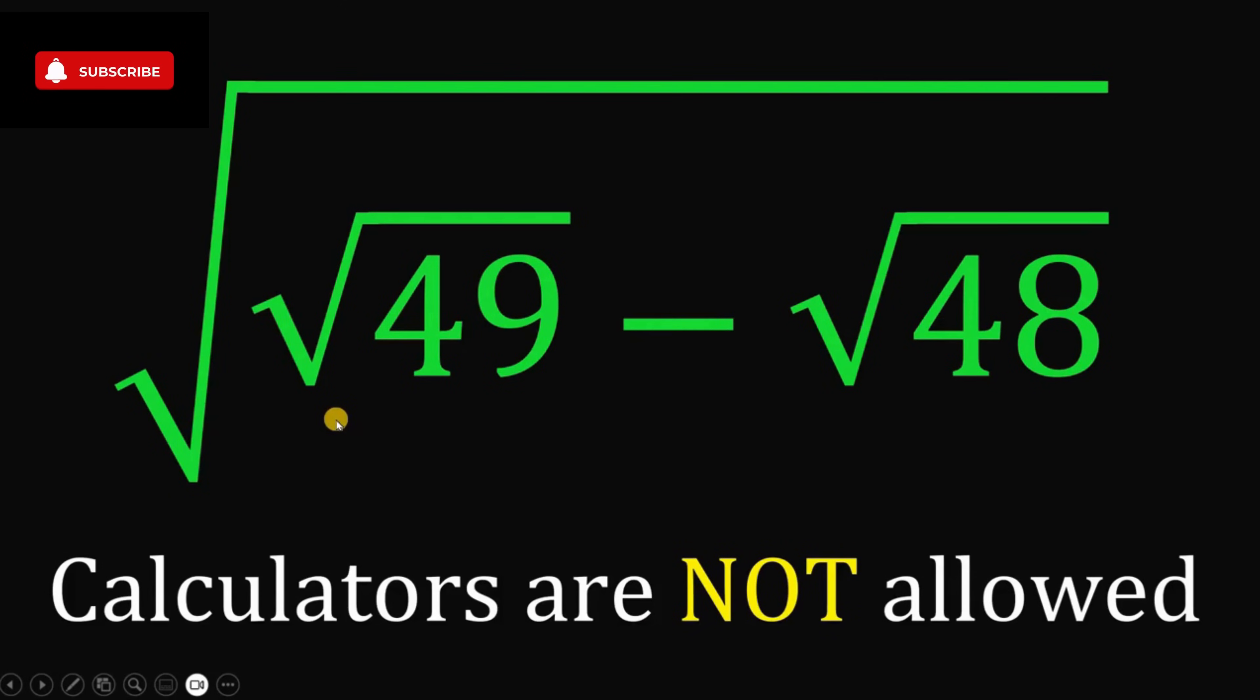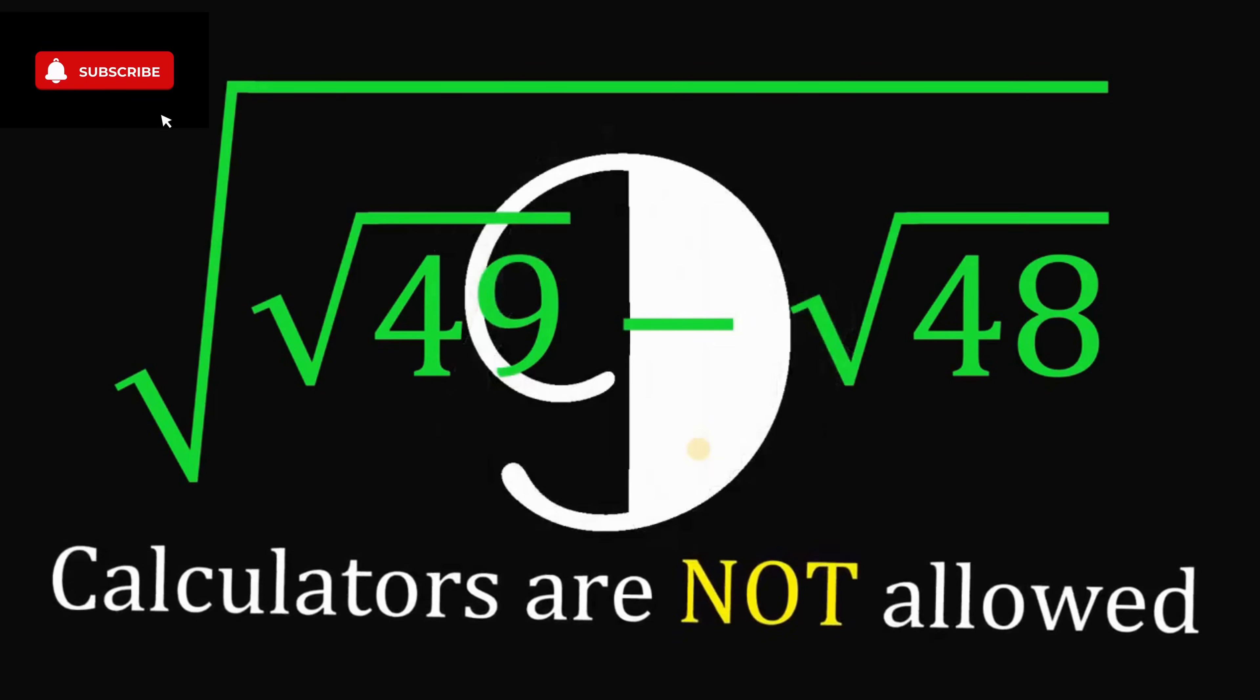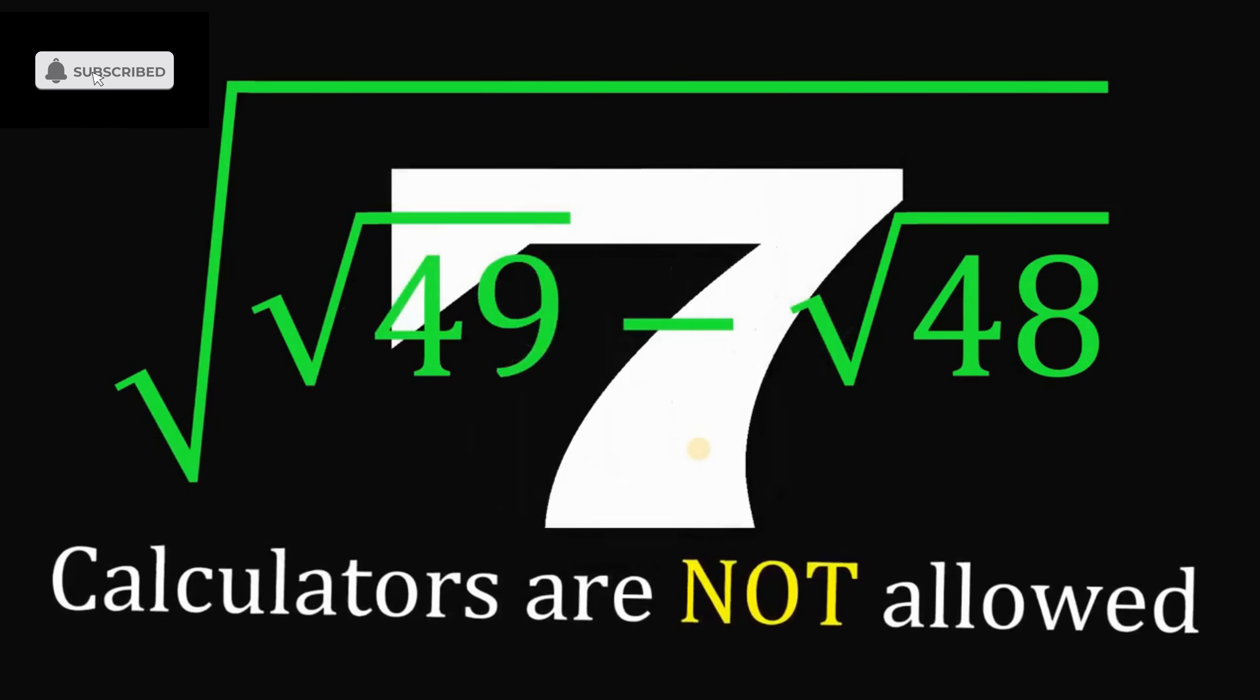Simplify this expression: square root of square root of 49 minus square root of 48, without using any calculators. Now you can pause this video if you want to give this problem a try.